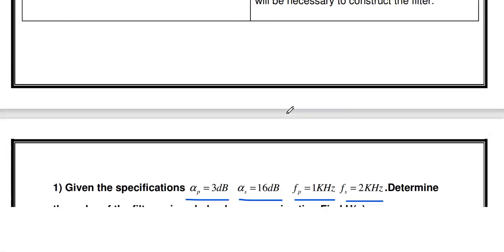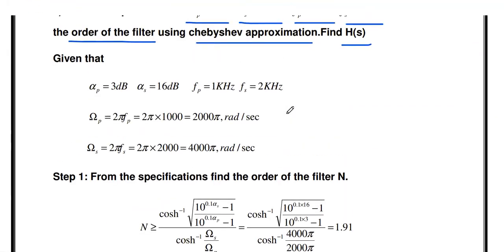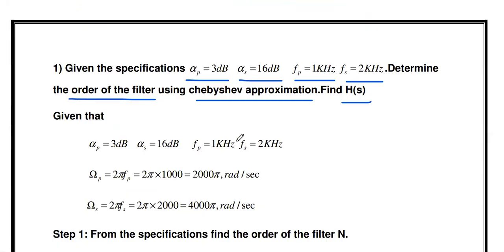The steps to design the Chebyshev filter are: first, find the order of the filter; second, round off to the next higher integer; third, find the poles of the filter; fourth, calculate the denominator polynomial; fifth, the numerator polynomial; then divide to get the transfer function.